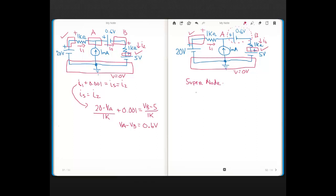So look what happens. So this is KCL. We're just treating nodes A and B here as one single node. So all I have is I have I1 flowing into the supernode, and I have the 1 milliamp flowing into the supernode. And then I2 is the only current flowing out of the supernode.